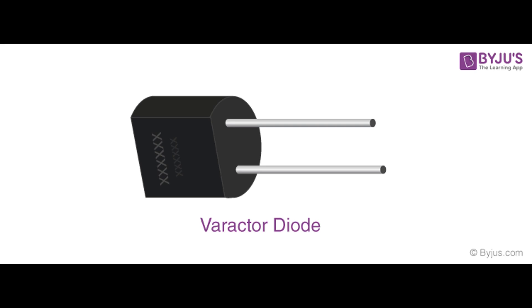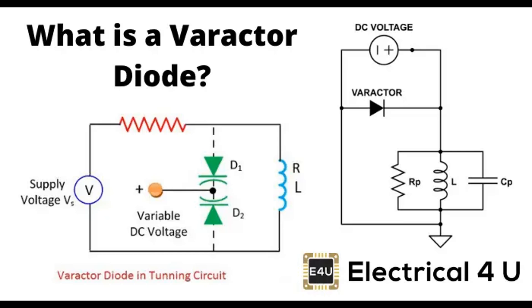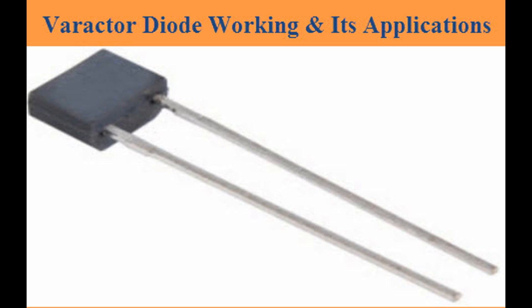Surge protection: Varactor diodes can be used in circuits to protect against voltage surges by acting as variable capacitors that absorb excess energy. They are used in sensitive electronic devices to prevent damage from voltage spikes.